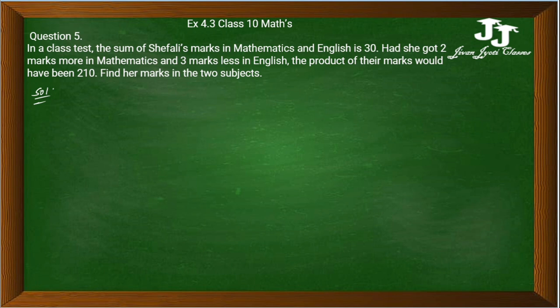यदि मैथ में 2 marks और लेकर आती और इंग्लिश में 3 marks कम लेकर आती, तो उनका जो प्रोडक्ट है वो 210 है।